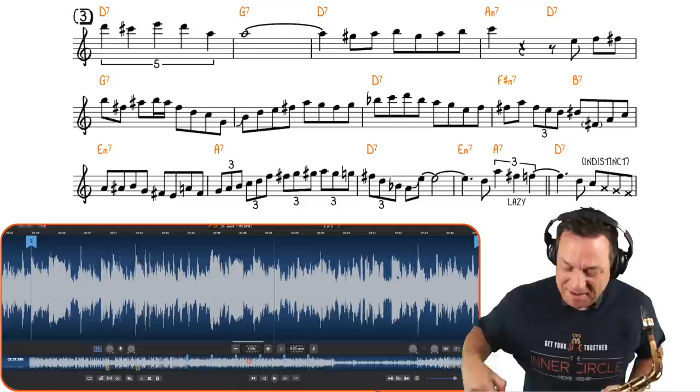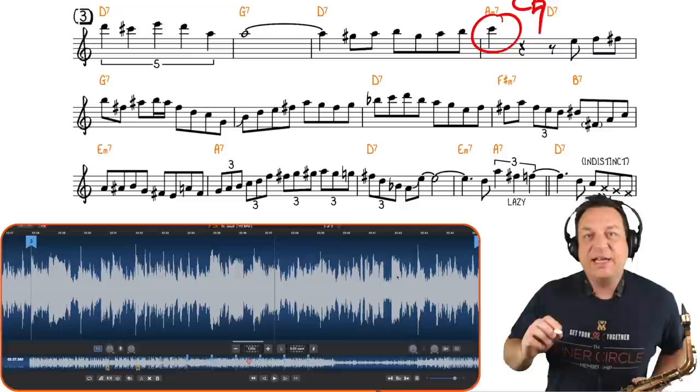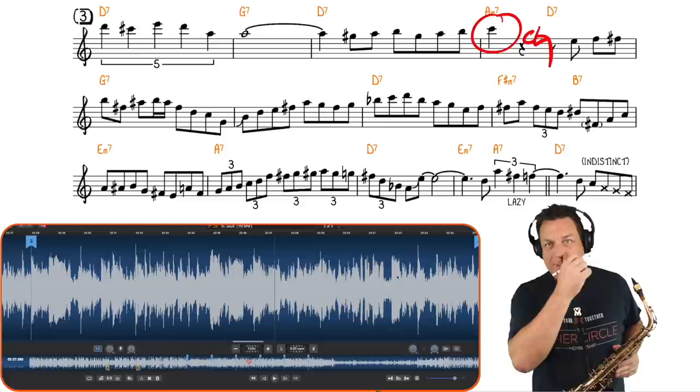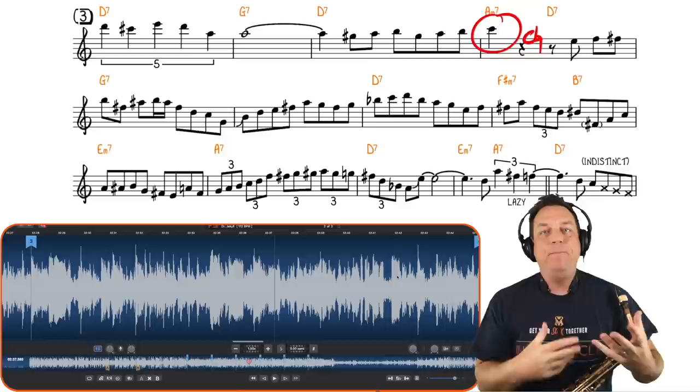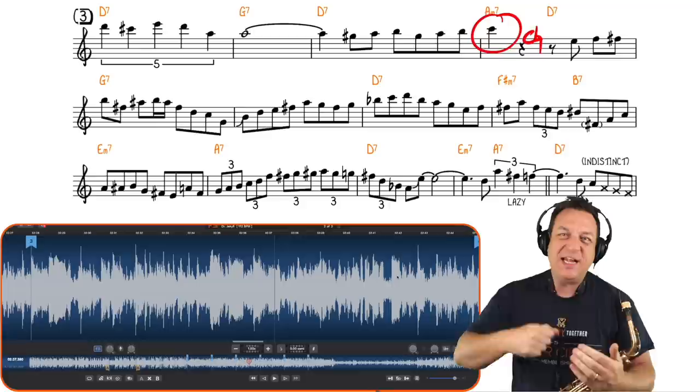And this whole D majorness suddenly resolves with this C natural, which really kind of spells out the—sorry, I went a little bit off the chart there—C natural. What is up with my writing? C natural, which really spells out the chords.